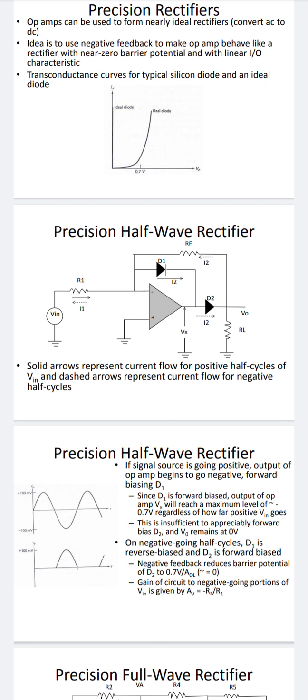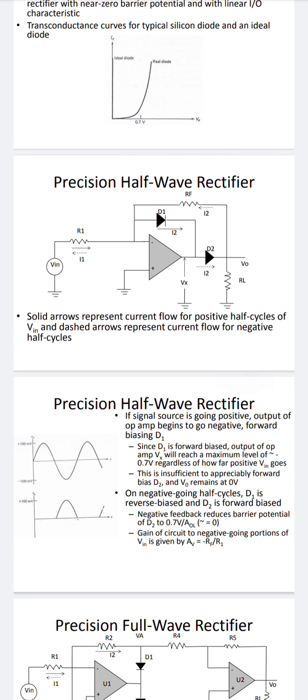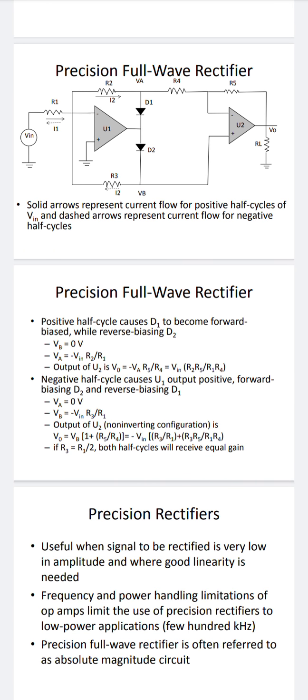During positive half cycles, D1 is forward biased and the op-amp output V_x is maximum at 0.7 volts, while D2 remains at zero volts due to insufficient forward bias. During negative half cycles, D1 is reverse biased and D2 is forward biased. D2 has a barrier voltage of 0.7 volts and D1 is at zero volts. This describes the complete working of the half-wave rectifier circuit.